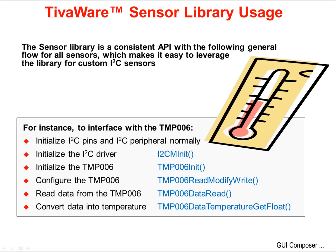The sensor library provides a consistent programming model with the flow shown for all sensors, making it easy to leverage the library for other custom I2C sensors. The example shown is for the TMP 006 infrared temperature sensor. First, the I2C peripheral and its pins must be configured. Second, the I2C driver can be initialized. Third, the TMP 006 can be initialized across the I2C connection. Fourth, the TMP 006 can be properly configured. At this point, data can be read from the device and converted into a temperature reading.